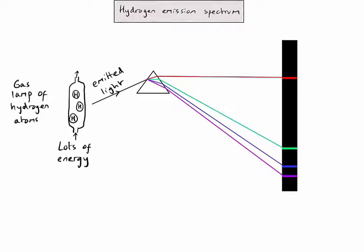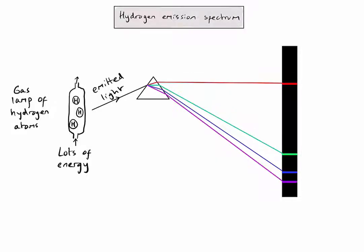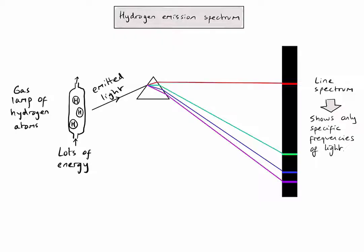The emitted light only contains very specific frequencies of light, which is why we end up seeing a line spectrum with just single lines of colour and not a continuous spectrum. A line spectrum is a spectrum that shows only specific frequencies of light — and it's important to use the word 'frequency' and not 'colour', otherwise you won't get the mark in an exam. The spectrum we can see here is called the hydrogen emission spectrum because it is the line spectrum produced when a gas lamp of hydrogen is excited by lots of energy.